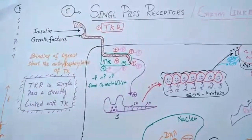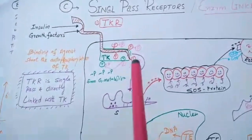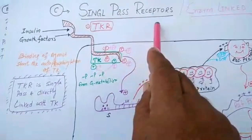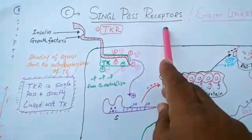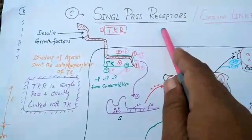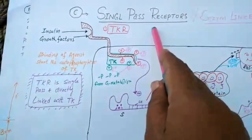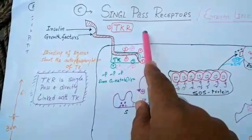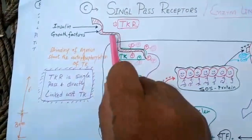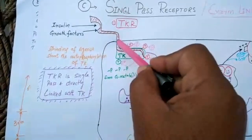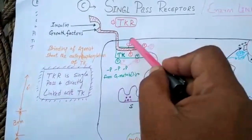The third family of membrane-bound receptors is single-pass receptors. They are also known as enzyme-linked receptors. This family has various subtypes, for example, tyrosine kinase receptor. This is tyrosine receptor, single one-time crossing the cell membrane.